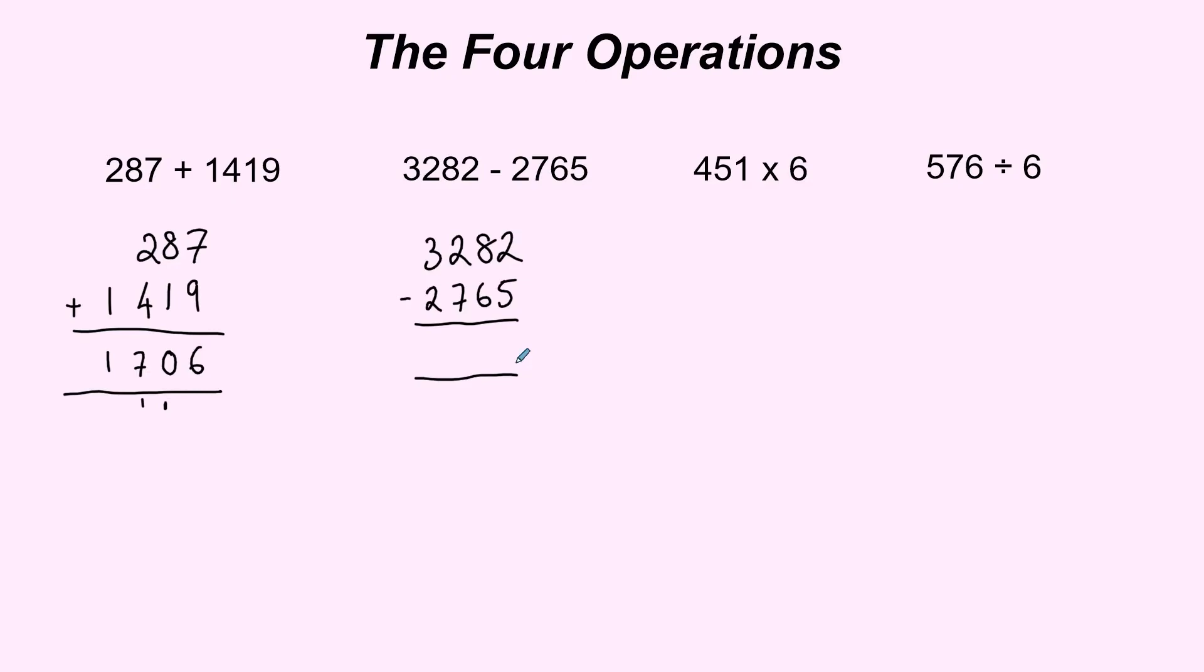Okay so what we're going to do is start at the end at the right hand column so two take away five and we can't do that so what we're going to do is we're going to move over to the next column and we're going to borrow from there. We cross out the eight make that a seven, we take the one that we borrowed here and move it across to the one column. That gives us a twelve now. Twelve take away five is something we can calculate. So twelve take away five is seven.